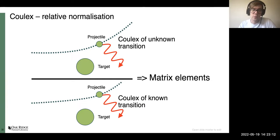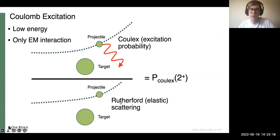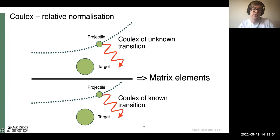In reality, rather than absolute normalization to Rutherford scattering, we use the Coulomb excitation of a known transition in the nucleus — for example the first excited 2+ state — to normalize everything else we see. This cancels out many factors and makes the analysis considerably simpler.